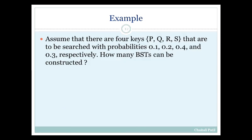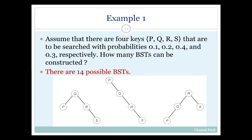We will see a simple example. Assume there are four keys P, Q, R, S that are to be searched with probabilities 0.1, 0.2, 0.4, and 0.3 respectively. How many BSTs can be constructed from these four keys? We can construct 14 different BSTs for this example. A few of the BSTs are drawn here. The question is which BST among all these 14 is optimal.